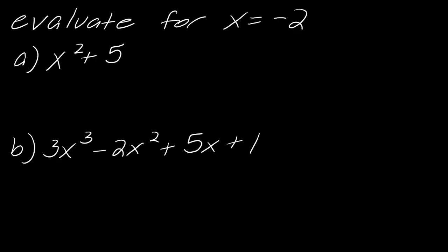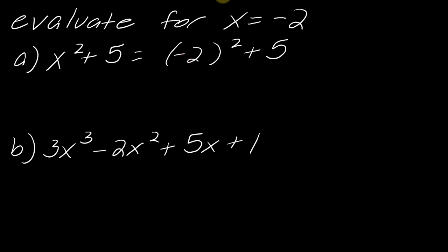Now, to evaluate a polynomial, it's really like evaluating any other expression. So if I asked you to evaluate the polynomial x squared plus 5 for x equals negative 2, I would just plug in negative 2 and work out whatever math I need to do after that. This negative 2 is going to be in parentheses, and since it's a negative number squared, that's really negative 2 times negative 2. So this becomes 4 plus 5, which equals 9.